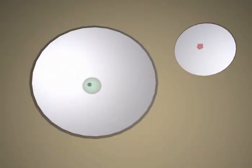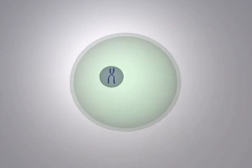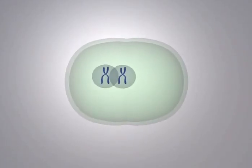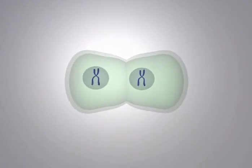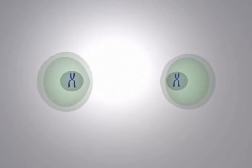Normal cells grow, multiply, and die on a regular controlled basis. While a cell grows, the DNA contained within the cell is duplicated. The cell then divides in half to create two new cells by a process called mitosis. This division process is controlled by multiple factors.